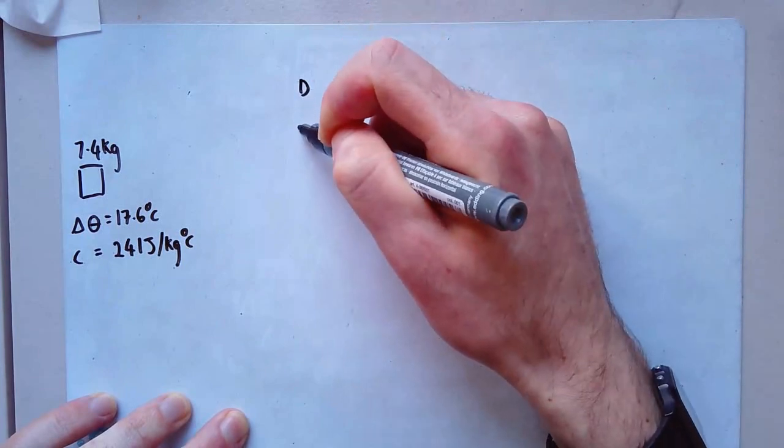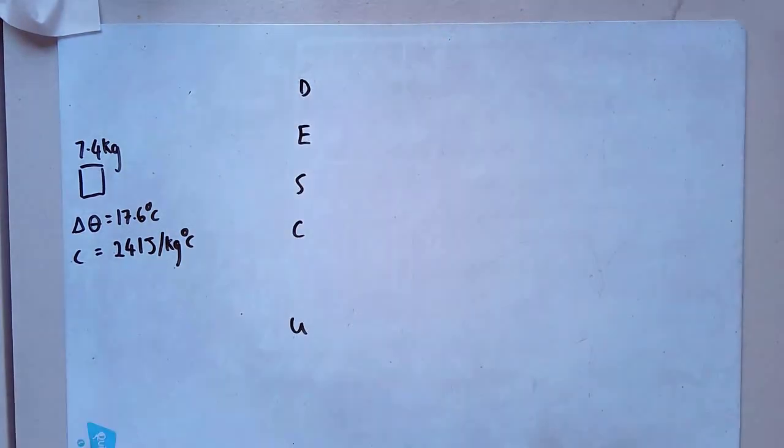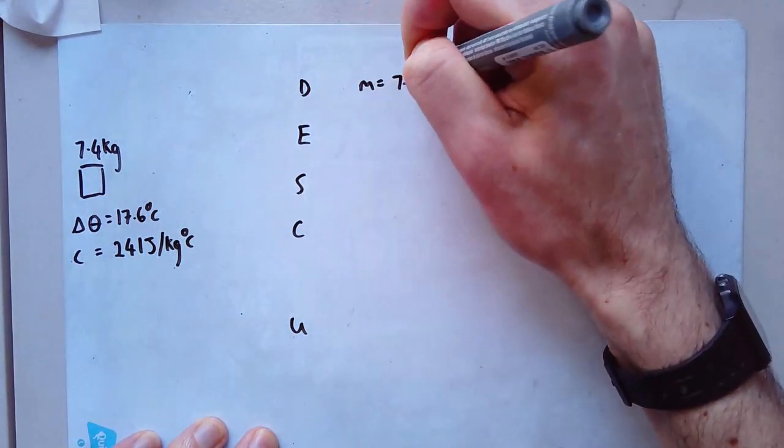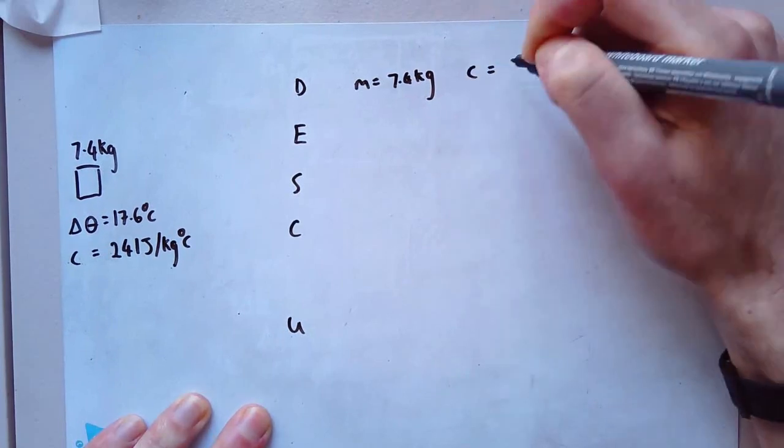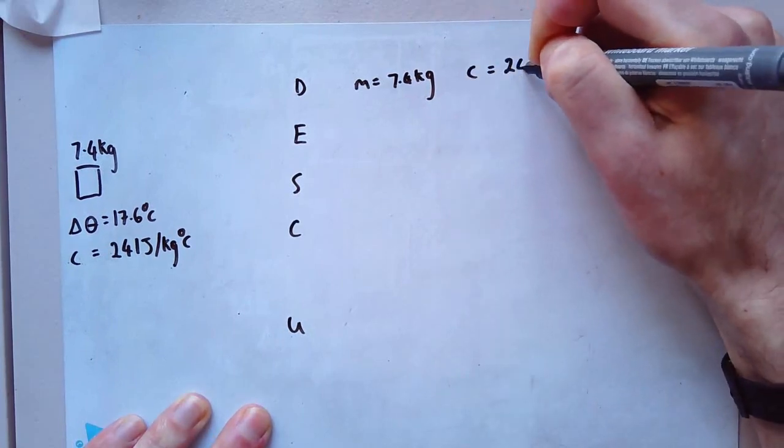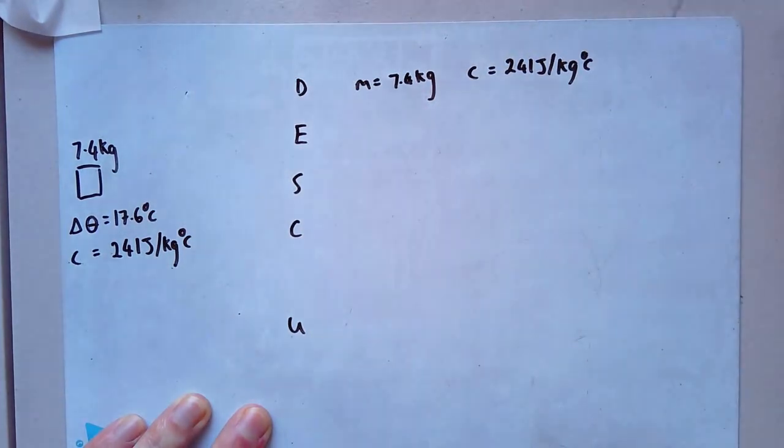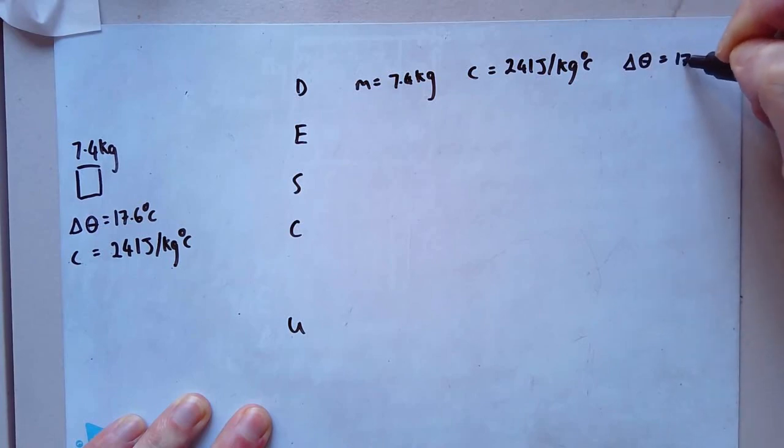D, E, S, C, U, as per usual, data. Mass equals 7.4 kilograms. C, my specific heat capacity, is 241 joules per kilogram degrees C. And delta theta equals 17.6.